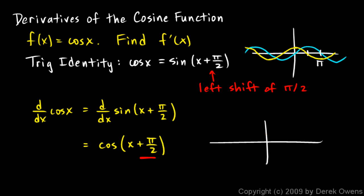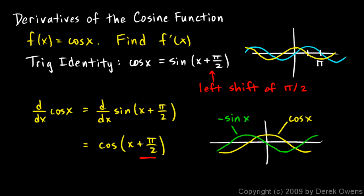Let's take our cosine function — these are tricky to draw freehand, but you get the idea, that's the cosine function. And if we shift that left pi over 2, we get this. You might recognize that — when we shift the cosine function left pi over 2, we get the negative sine function. So the derivative of the cosine function is the cosine function shifted left pi over 2, which is the negative sine function. The derivative of cosine x is negative sine x.